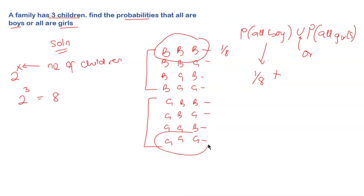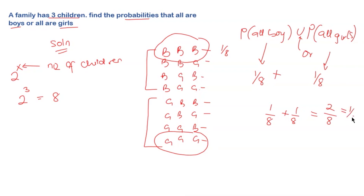Similarly, the probability that all are girls is also 1 over 8. Adding them together: 1 over 8 plus 1 over 8 gives us 2 over 8, which simplifies to 1 over 4. So the probability that a family of three children has either all boys or all girls is 1 over 4.